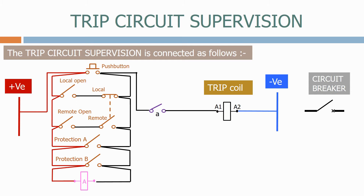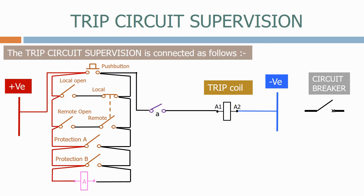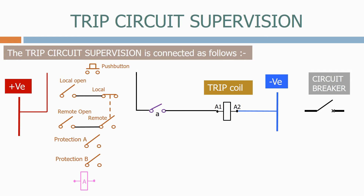Firstly, we have an A-coil monitoring the trip contacts. This coil has a high resistance. We daisy chain the trip wiring and put the A-coil right at the end of the chain so that it monitors 100% of the wiring.